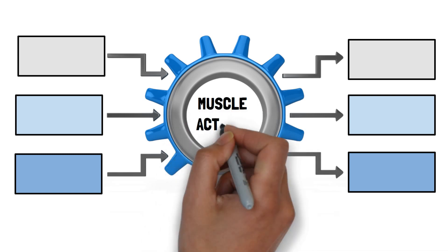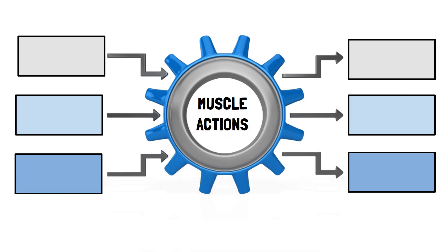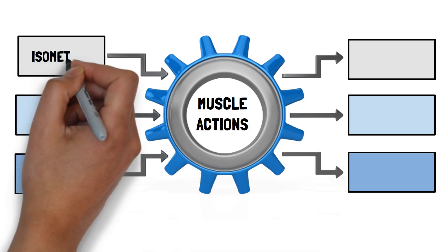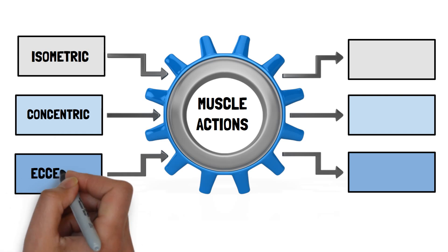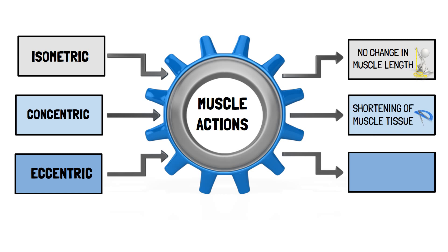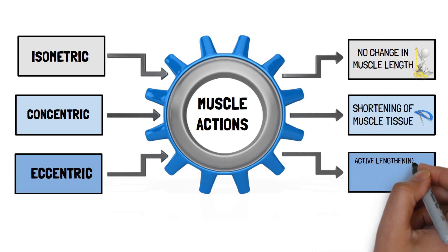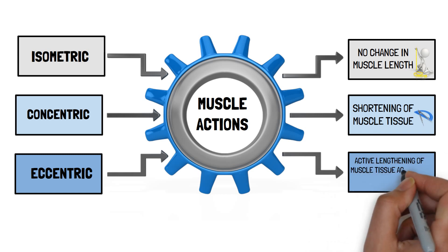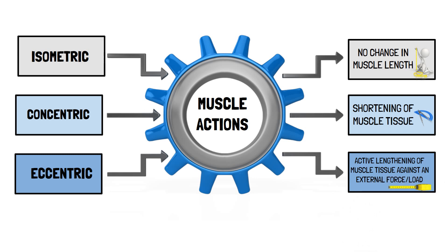Muscle actions are categorised as isometric, concentric or eccentric. Isometric muscle actions involve no change in muscle length. Concentric muscle actions involve the shortening of muscle tissue. And eccentric muscle actions involve the active lengthening of muscle tissue against an external force or load.